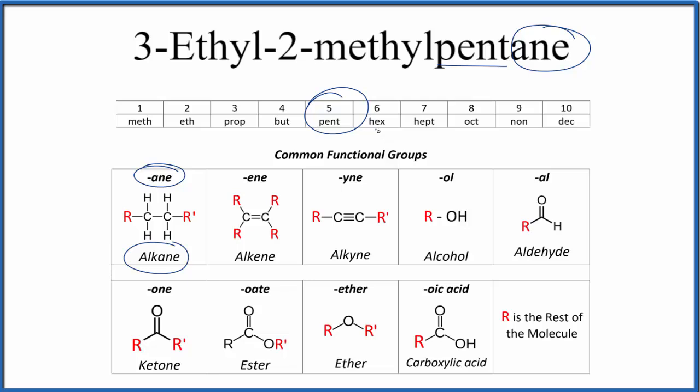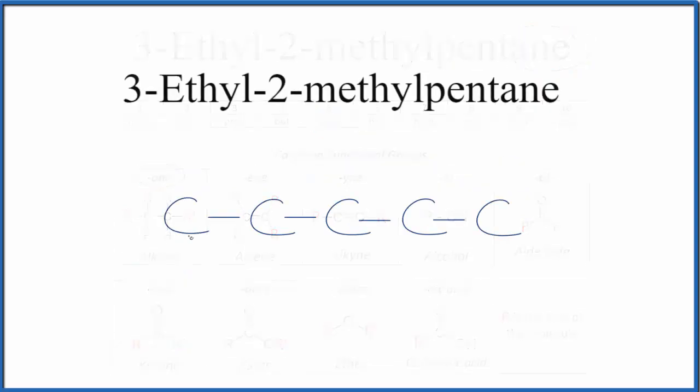Pent means five, so we're going to have five single bonded carbon atoms. That'll be our longest chain. That'll look like this, and we can number these one through five. So this is pentane, our longest chain.